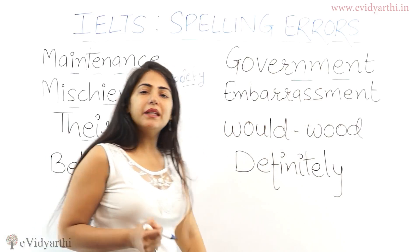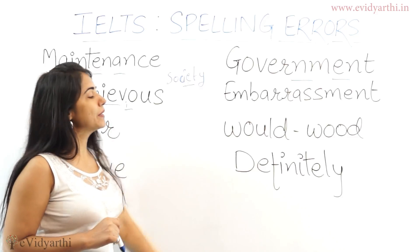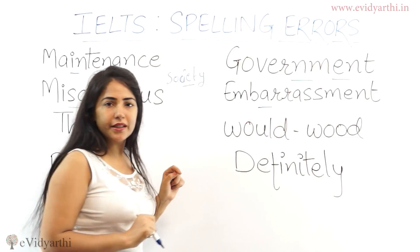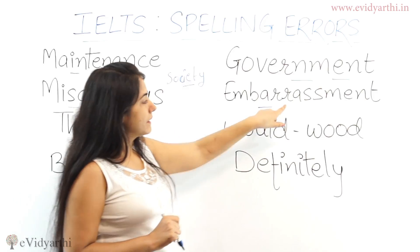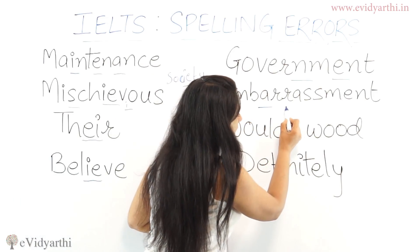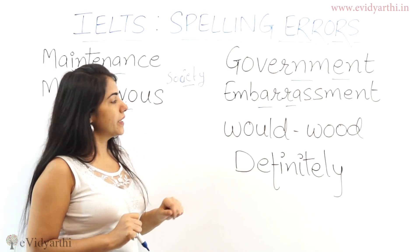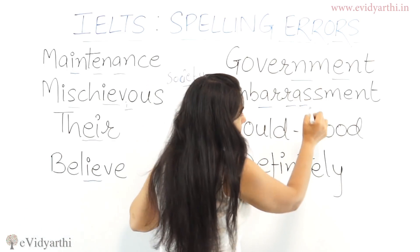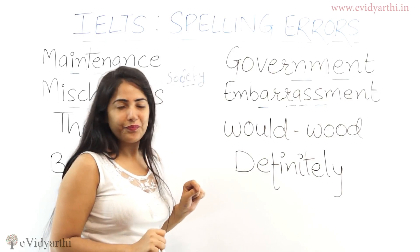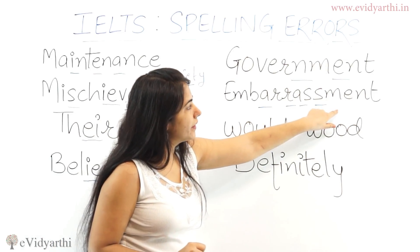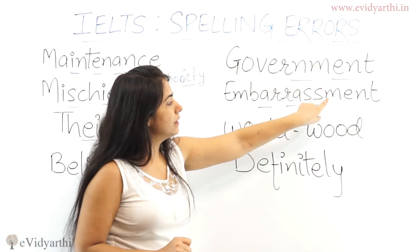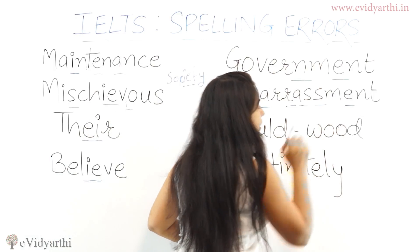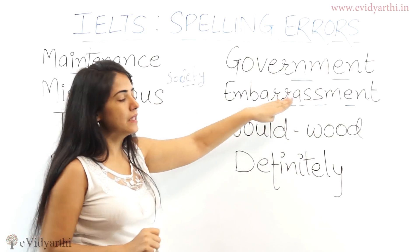Next is 'embarrassment,' which is a long word with several common errors. Students often use double R incorrectly, and similar to 'government,' after the 'M' people use 'A' instead of the correct vowel. You have to be very careful with 'embarrassment.'